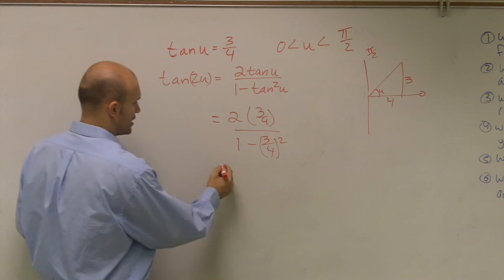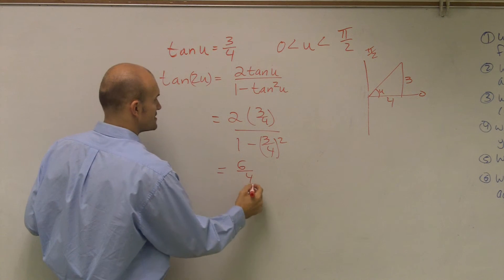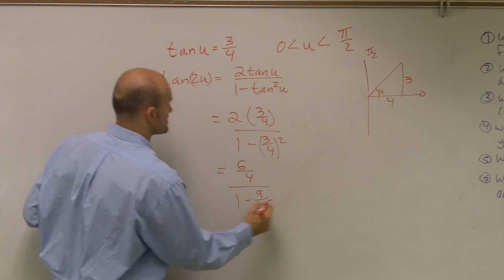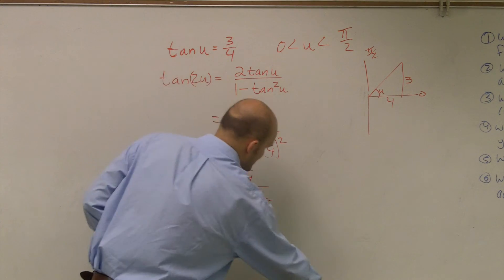Now what I simply do is simplify this. So I have 6 fourths over 1 minus 9 sixteenths. Now to get rid of these numbers on the bottom, I can multiply everything times 16.